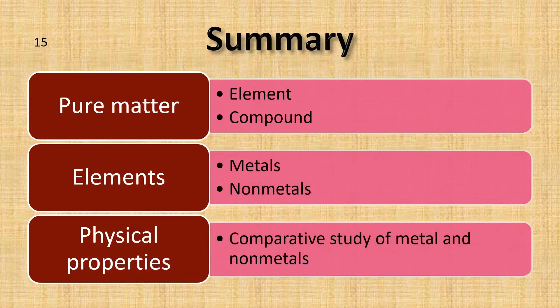Summary of part 1: Matter in pure form exists as element and compound. All elements are classified as metals and non-metals on the basis of their characteristics. Metals and non-metals exhibit different physical properties.